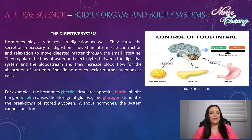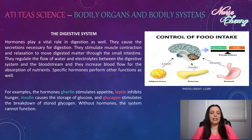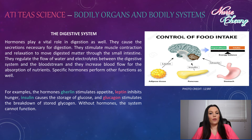For example, the hormone ghrelin stimulates appetite. Leptin inhibits hunger. Insulin causes the storage of glucose. And glucagon stimulates the breakdown of stored glycogen. Without hormones, the system cannot function.